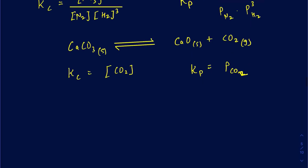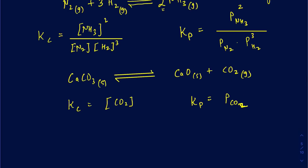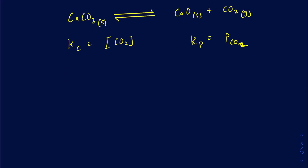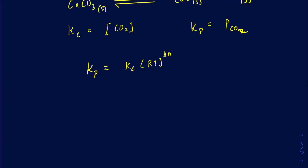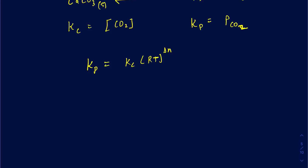So how do we relate Kc and Kp? The equation is: Kp equals Kc times RT to the power delta N. Your delta N is going to be the gas moles of products minus the gas moles of reactants.